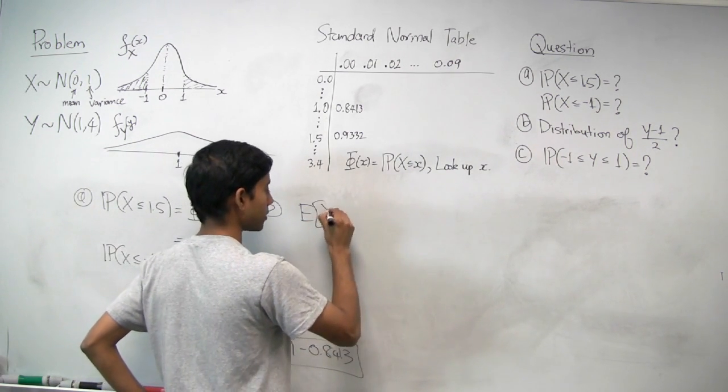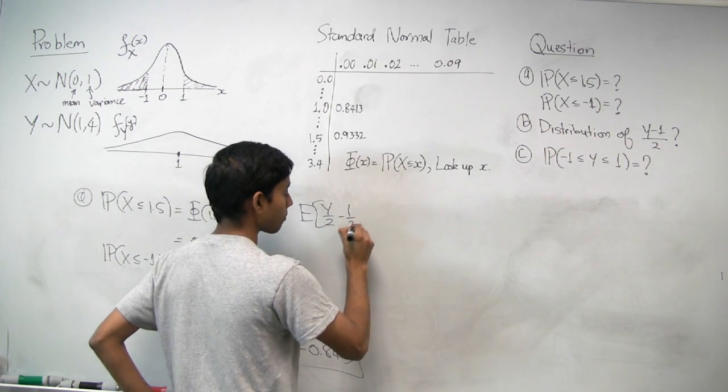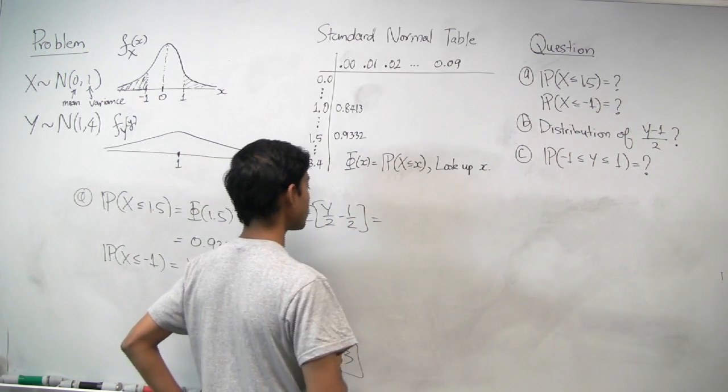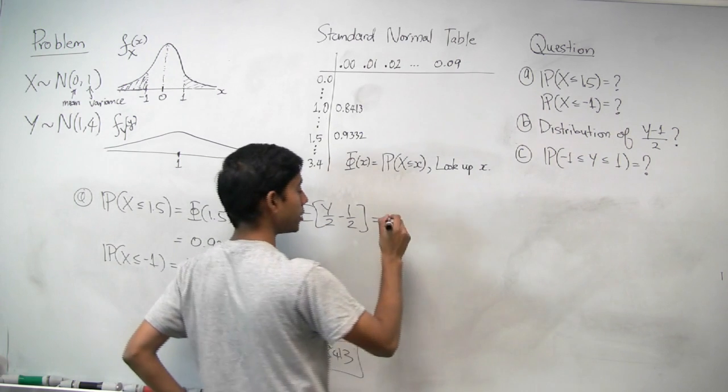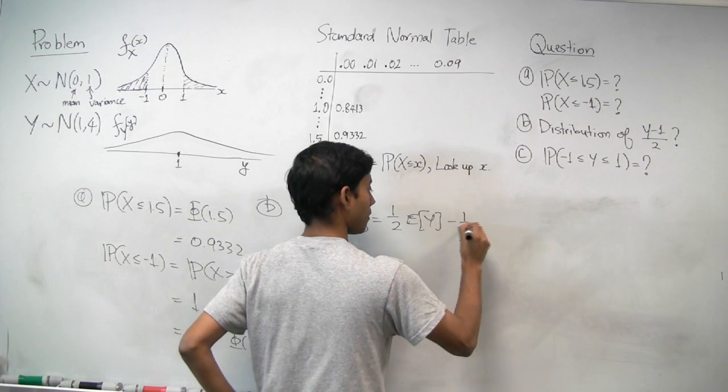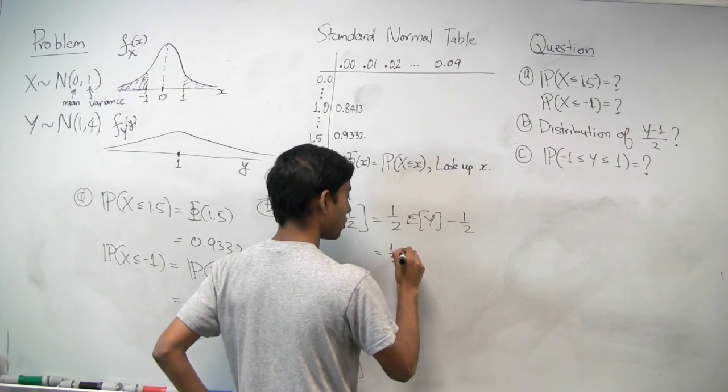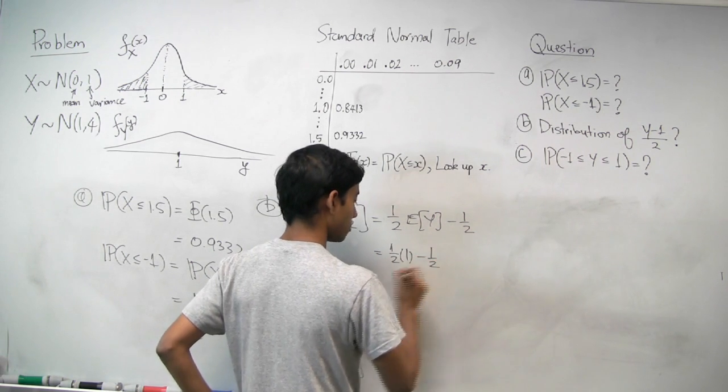So the mean in this case, I'm going to write that as Y over 2 minus 1 half. Now, the expectation operator is linear, and so that's going to be... And the expectation in this case is 1, so that's going to be 0.